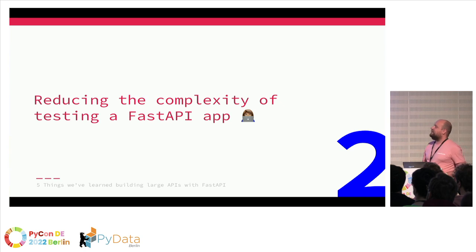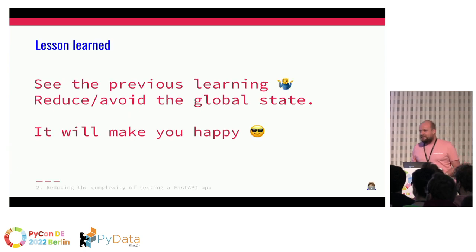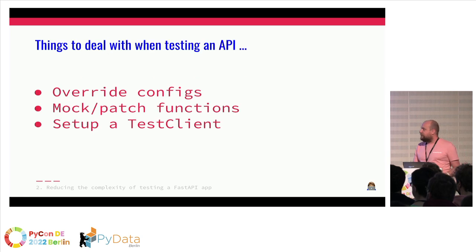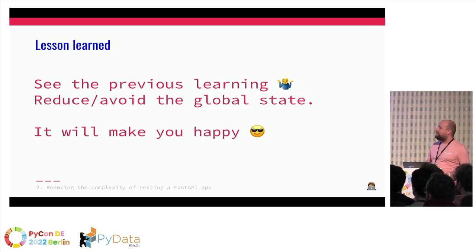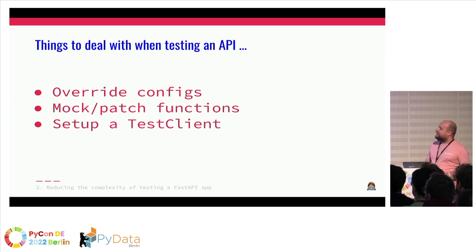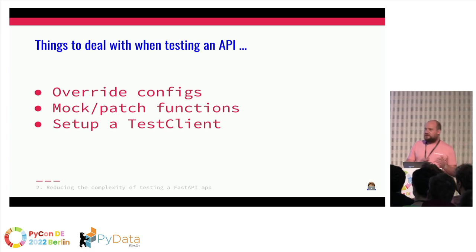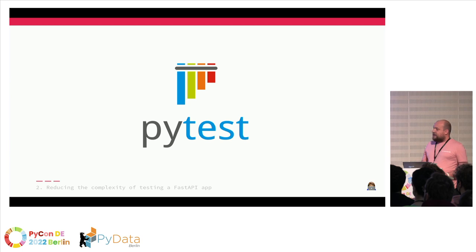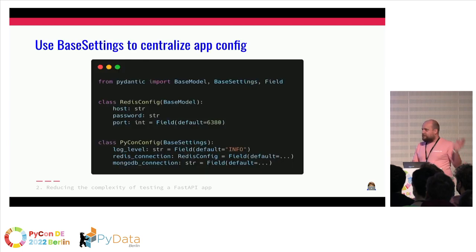The second learning: if you do the previous thing, setting up your unit test pipeline will be much easier. You won't be frustrated the whole day behind your computer. What you typically do when setting up a test suite is override settings, mock or patch functions, and set up a test client — either authenticated or not — to test your API calls. At Investuite, we use PyTest.